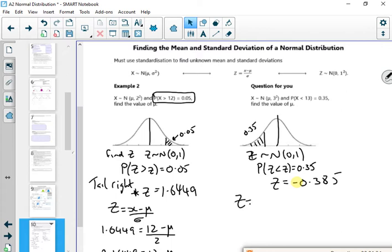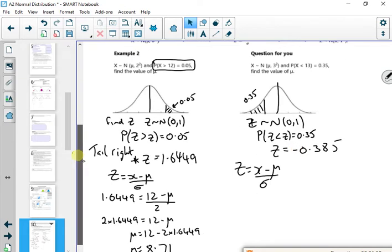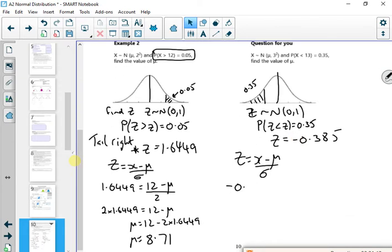So minus 0.385 will do. Now then, if you use z equals x minus mu over sigma, so my z-value is minus 0.385, or more accurate if you need to be. The x-value is 13. Mu, I don't know, sigma is 3.